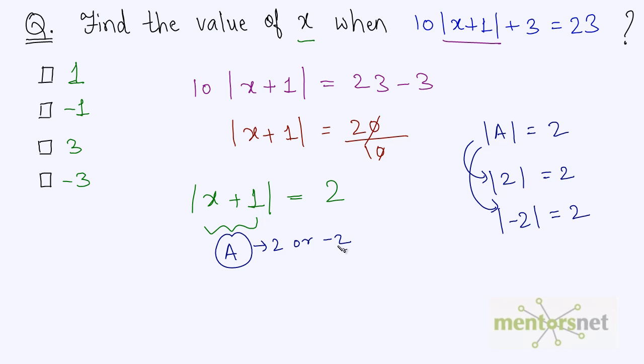That's why we can write our expression as x plus 1 is equal to 2 or x plus 1 is equal to minus 2. Now let's solve this. x is equal to 2 minus 1 is 1, or x is equal to minus 2 minus 1 is equal to minus 3. So x is equal to 1 and x is equal to minus 3.